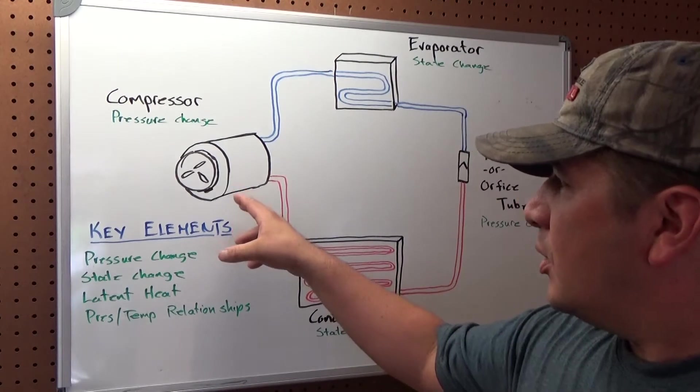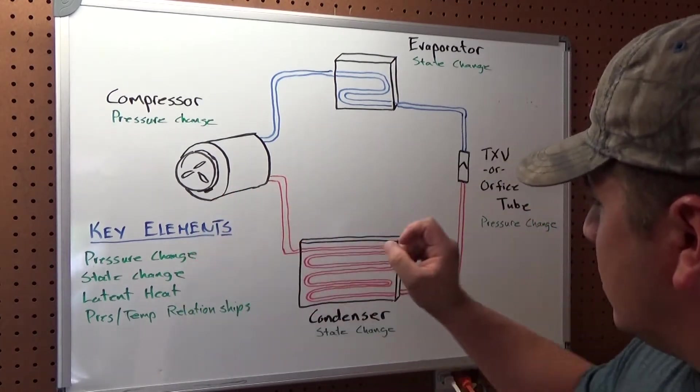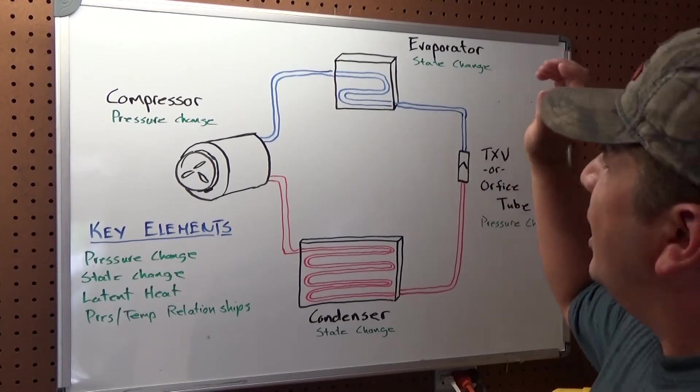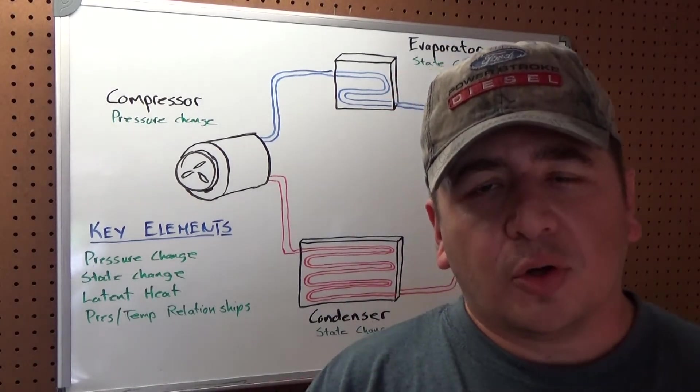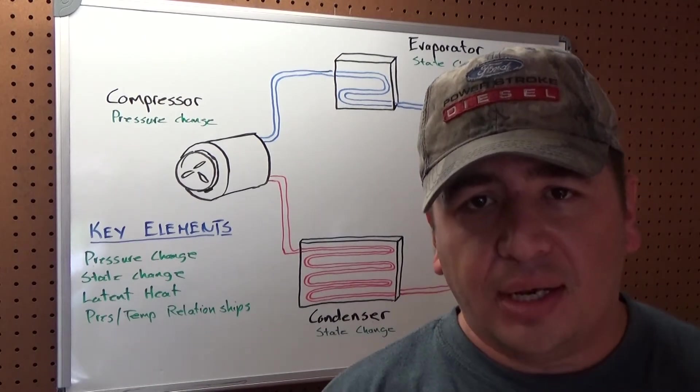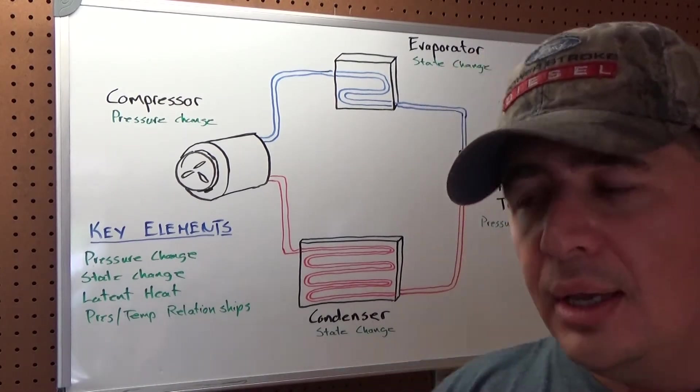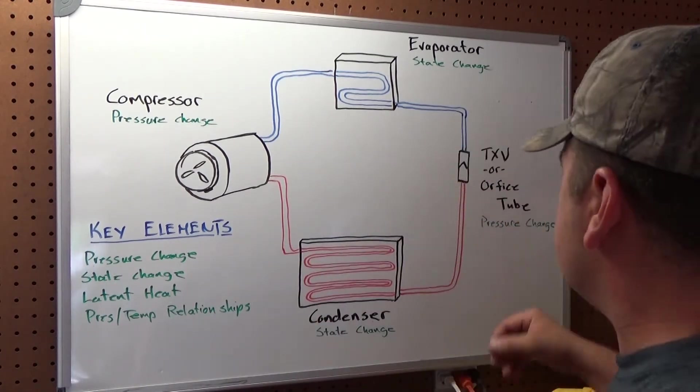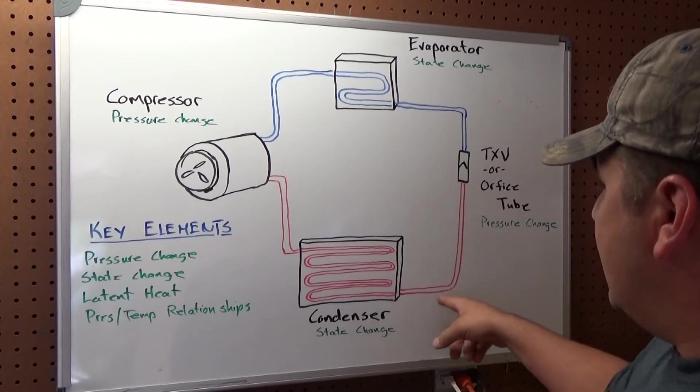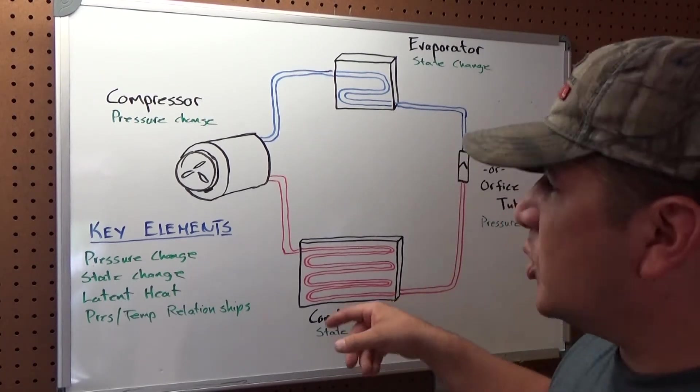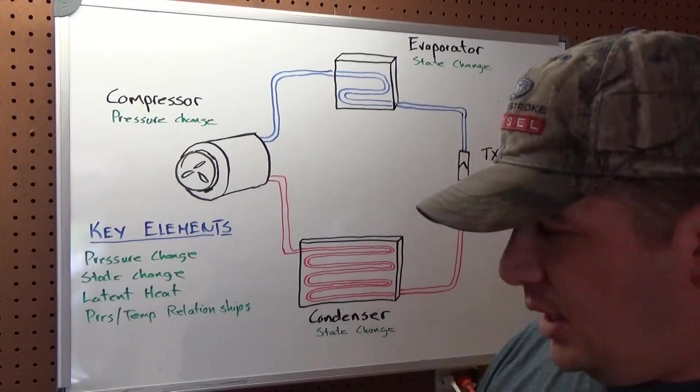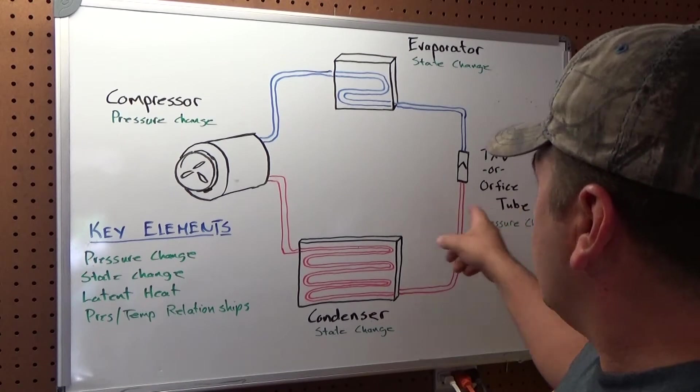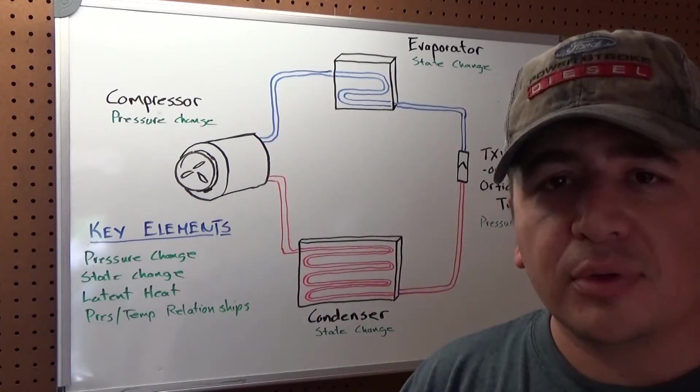So the main components are your compressor, your condenser, your expansion valve or orifice tube, and your evaporator. Now, systems are going to have either an accumulator dryer or a receiver dryer, and usually dependent upon whether you have an expansion valve or an orifice tube, it may be in line after the condenser or it may be in line after the evaporator. Typically, with expansion valves, you see it in line after the condenser, and with orifice tubes, you see it in line after the evaporator.